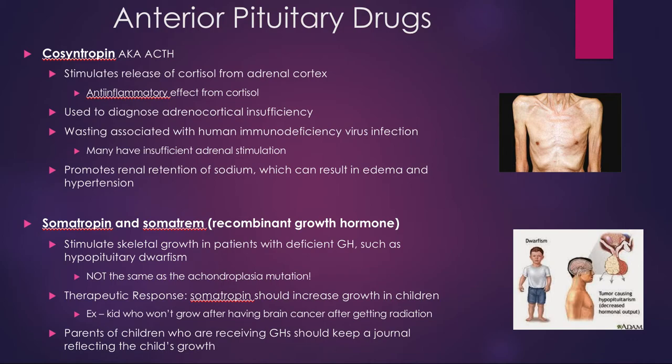Somatropin and somatrem are actually recombinant growth hormones. They stimulate skeletal growth in patients with deficient growth hormone. This is not the same as achondroplastic dwarfism — this is hypopituitary dwarfism. While they may look the same on the outside, it's not a genetic problem or a genetic mutation. This is actually a defect in the pituitary gland.